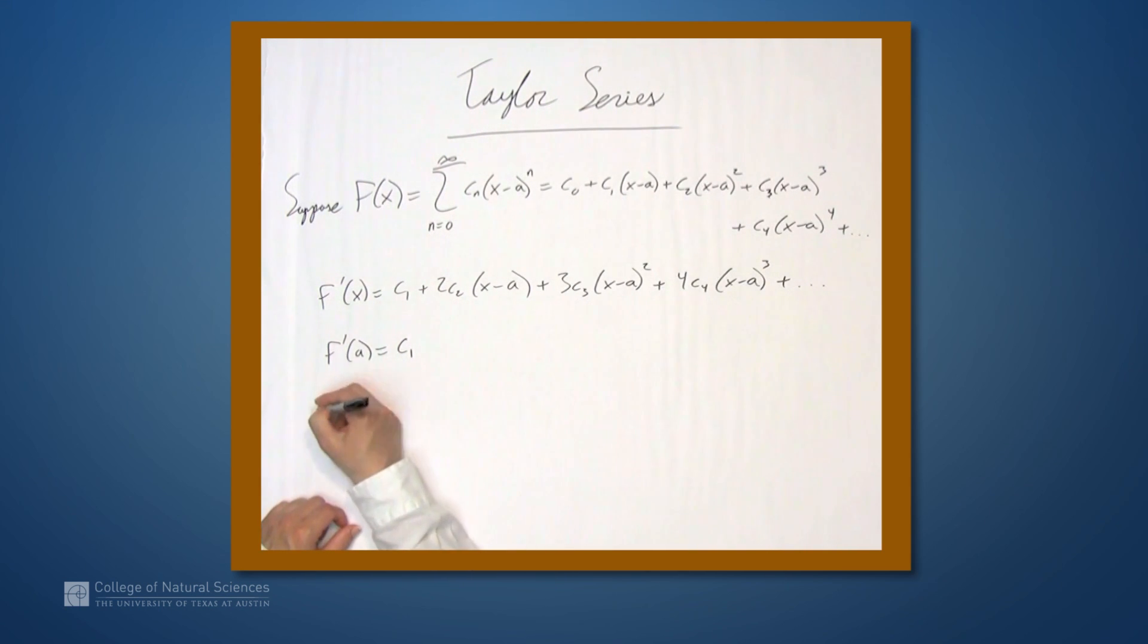Let's now look at the second derivative. So the second derivative will be the term-wise derivative of this thing. So c1 disappears. This next term just becomes 2c2. This becomes 6c3x-a to the first power. The next thing becomes 12c4x-a squared, and so on.